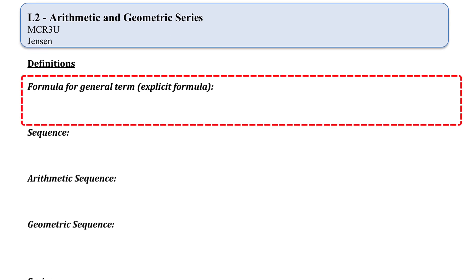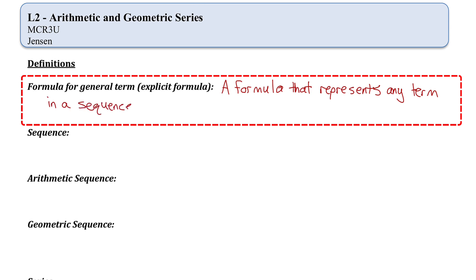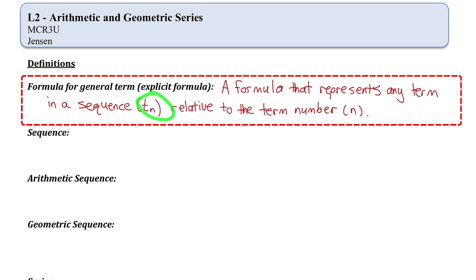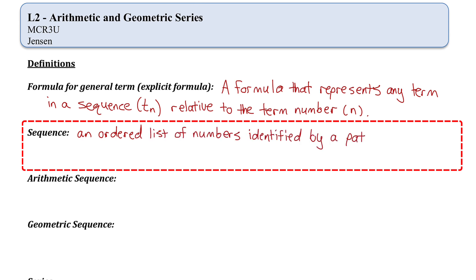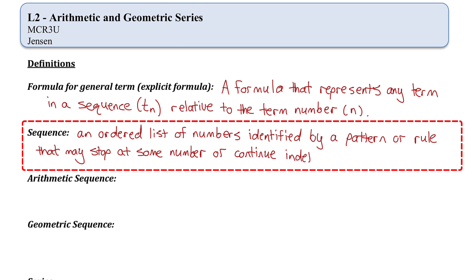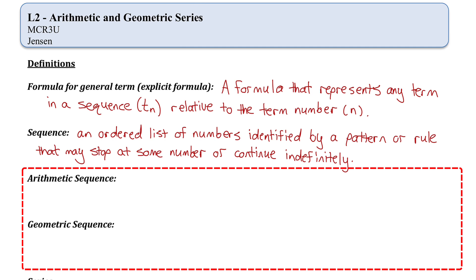The formula for the general term is a formula that represents any term in a sequence relative to the term number — which means a formula where if you input the term number, it'll output the value of the term. A sequence is an ordered list of numbers identified by a pattern or rule that may stop at some point or continue indefinitely. In the last lesson, we covered two special types of sequences: an arithmetic sequence and a geometric sequence.